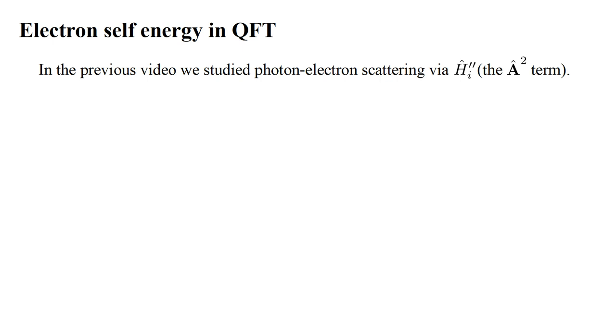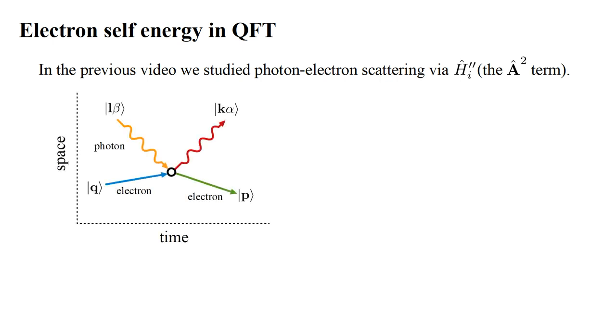In the previous video, we studied photon-electron scattering via the H-hat-I double-prime part of the interaction Hamiltonian. This allowed us to describe the destruction of an electron and a photon, followed by the creation of a different electron and a different photon. We interpreted this as electron-photon scattering, and we found the following transition rate.